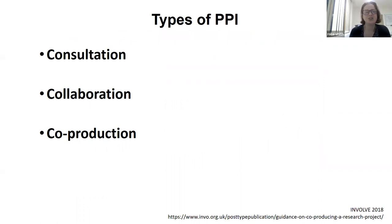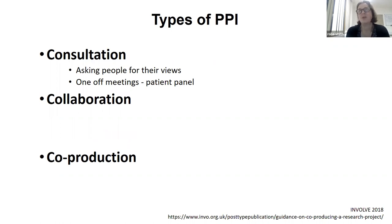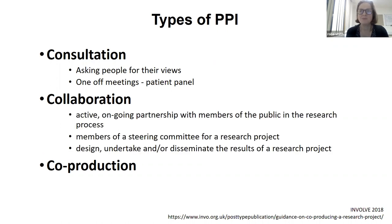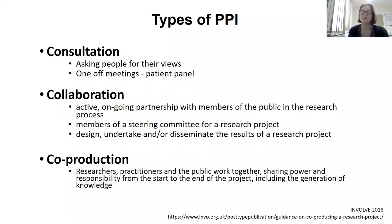There are different types of PPI — really a gradation from consultation to collaboration to co-production. Consultation is really just asking patients' views: one-off meetings, maybe a patient panel. Collaboration is a much more integrated role — you get an ongoing partnership, patients would sit on the trial steering committee or trial management committee, and they're involved in all stages: designing, undertaking, and disseminating results. But co-production takes that one step further. It's really about researchers, practitioners, and public patients working together, sharing power and responsibility right from the beginning to the end of the project — generating the data, generating the knowledge. It's a partnership throughout from beginning to end.